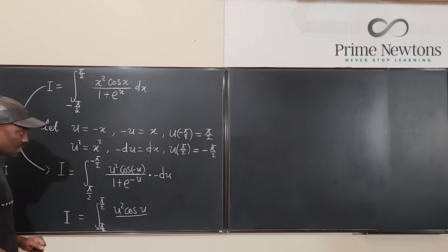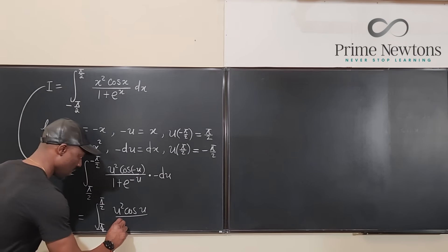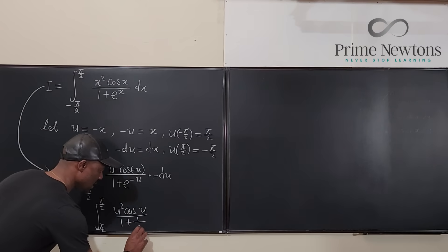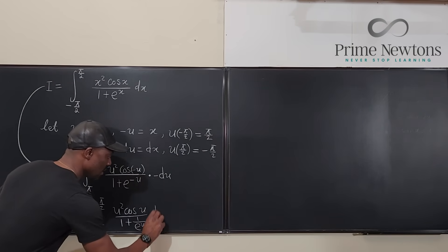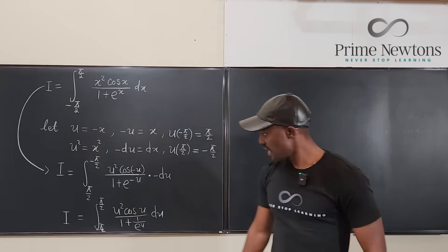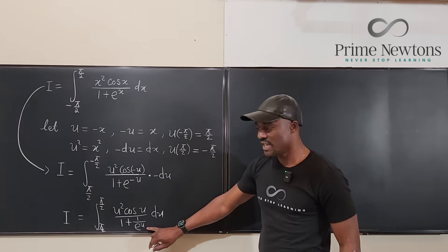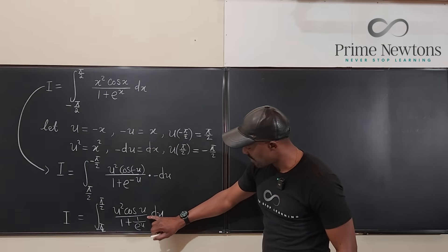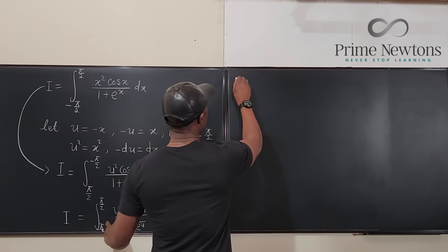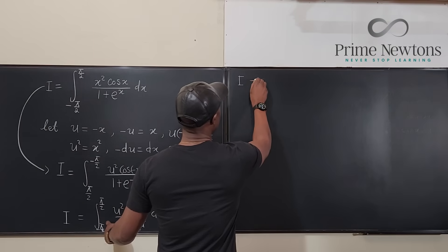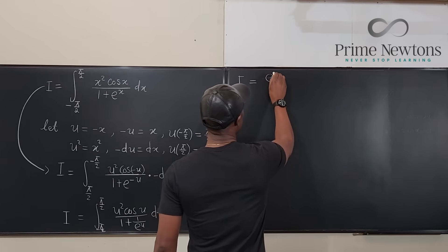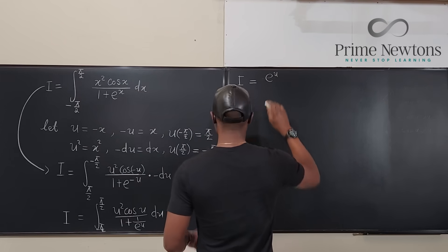And then this is going to become nothing new. It's just 1 plus 1 over e to the u du. Now we don't want a fraction inside a fraction. So I'm going to multiply the top and bottom by e to the u so that what I have is going to be I equals, if I multiply the top by e to the u I'm going to have e to the u, sorry we have the integral.